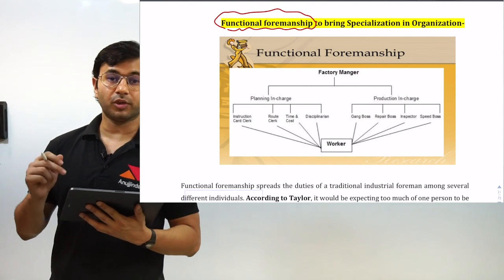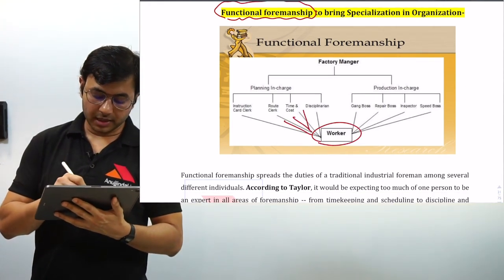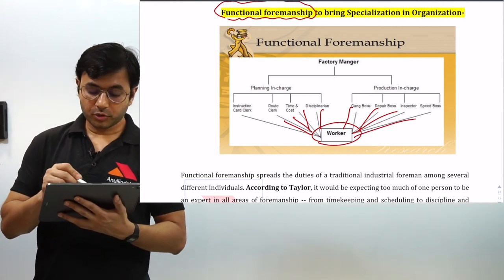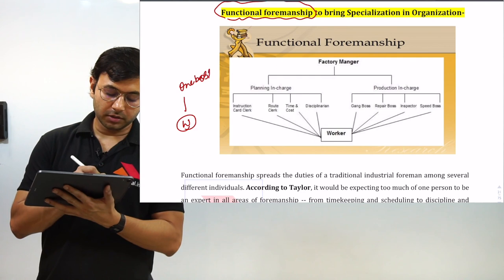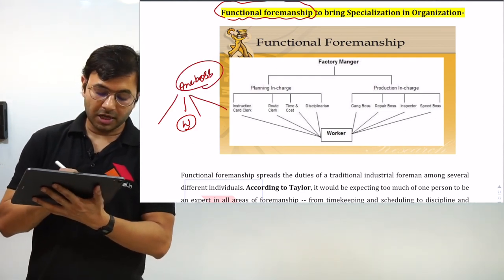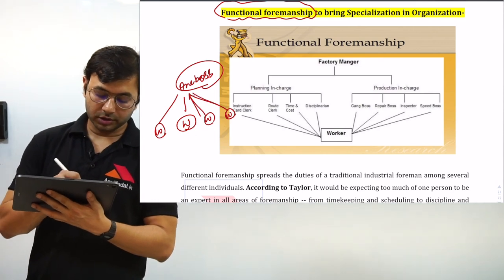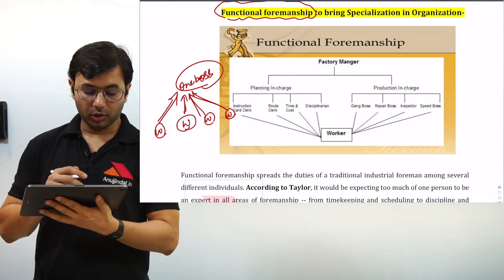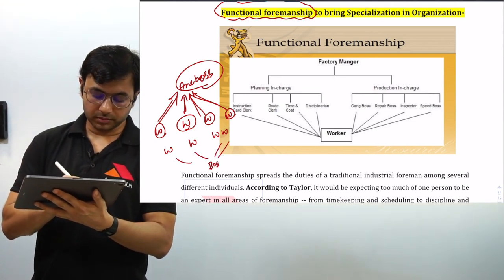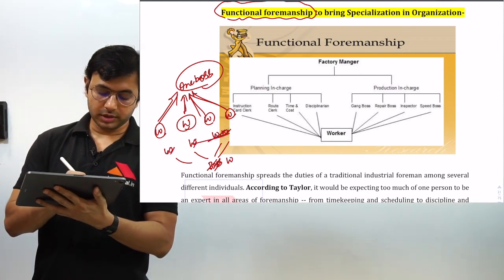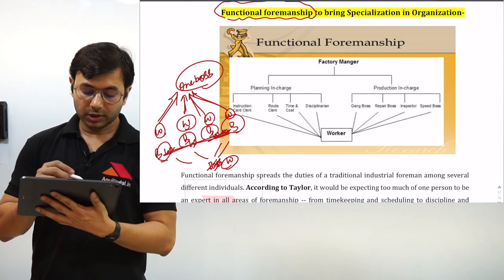Taylor also talked about functional foremanship, which is completely opposite to unity of command. It says that every worker should be handled by eight foremen or supervisors. Unity of command says that one worker should have only one boss — one boss may have multiple workers below him, but one worker should have only one boss. Functional foremanship flips this around — one worker is being managed by multiple bosses. This is what functional foremanship is.